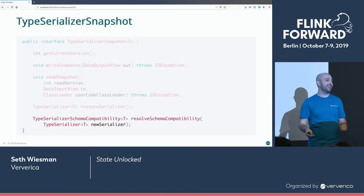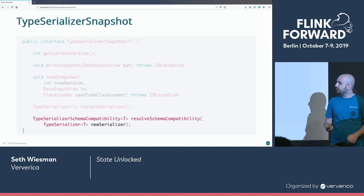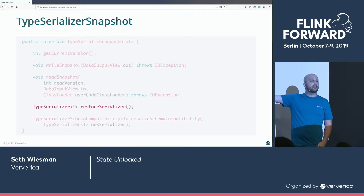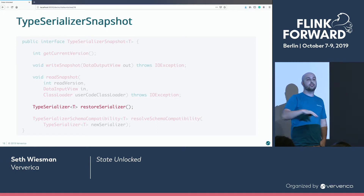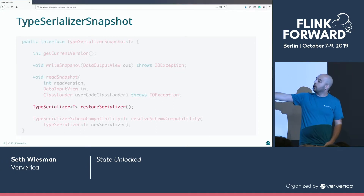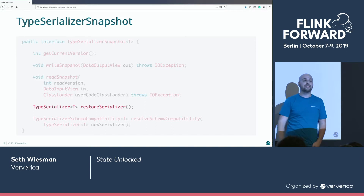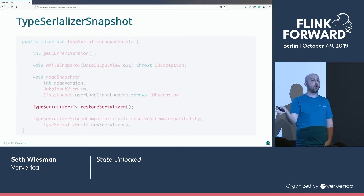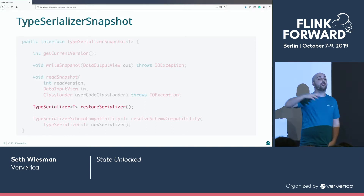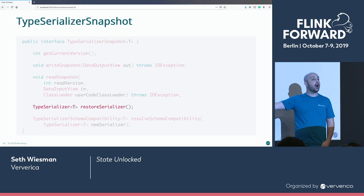If it's a breaking change, Flink can't handle it out of the box. And finally, we need a special serializer. When I say schema and serializer are the same thing, this is what I'm talking about: we need a serializer that can take your old bytes and deserialize them into your new Java object.